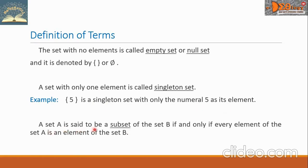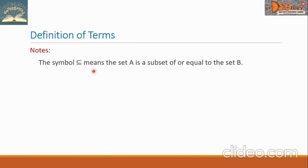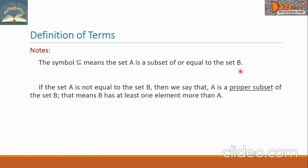A set A is said to be a subset of set B if and only if every element of set A is an element of set B. It is denoted by the symbol A is a subset of B. Note that this symbol means set A is a subset of or equal to set B. If set A is not equal to set B, then we say A is a proper subset of set B — meaning B has at least one element more than A. This is denoted by the proper subset symbol, and read as: A is a proper subset of B.